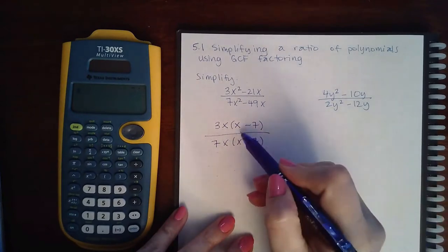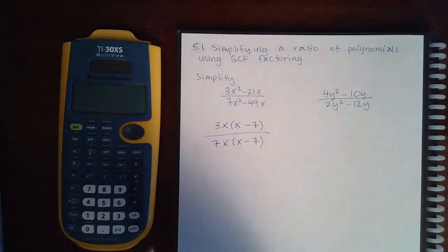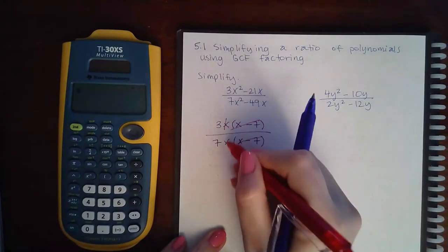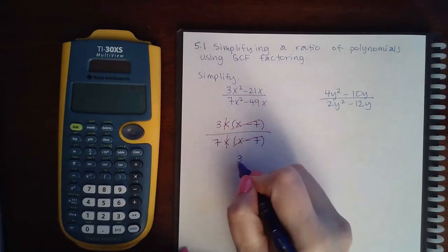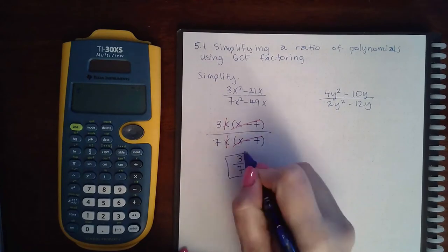Now here, the factors x minus 7 will cancel, and the factors x will cancel, leaving me with just the fraction 3 over 7.